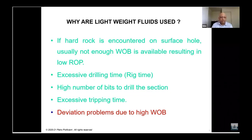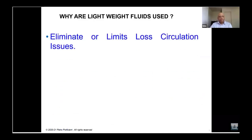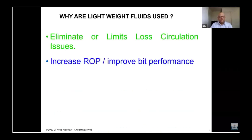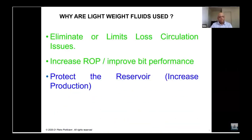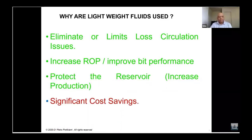There is also a deviation problem due to high weight on bit. If you apply excessive weight on bit, you can accidentally deviate the well. The two main criteria are: eliminating loss circulation issues and increasing ROP and bit performance. If you are in a productive zone, you protect your reservoir — in that case you need nitrogen, not air. But the overall objective is to save the cost of drilling.